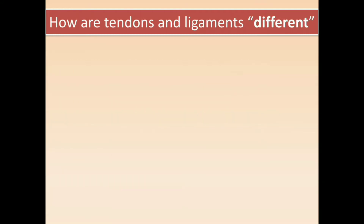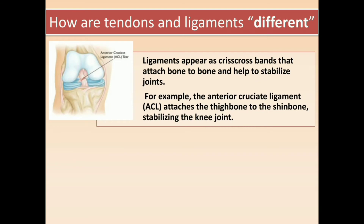Ligaments appear as criss-cross bands that attach bone to bone and help to stabilize joints. For example, the anterior cruciate ligament — the ACL — attaches the thigh bone to the shin bone, and it provides stabilization to our knee joint.